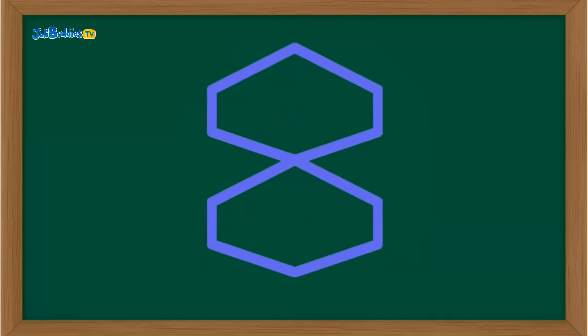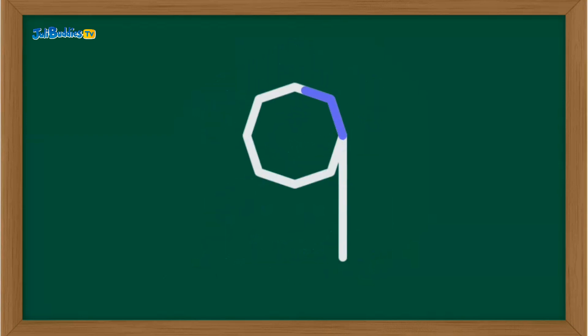Almost at ten. Here's number nine. Draw a circle at the top, then a straight line down from the circle. Awesome! That's number nine.